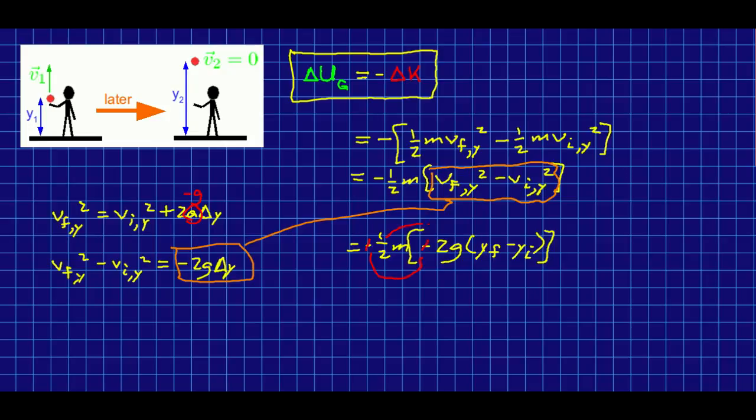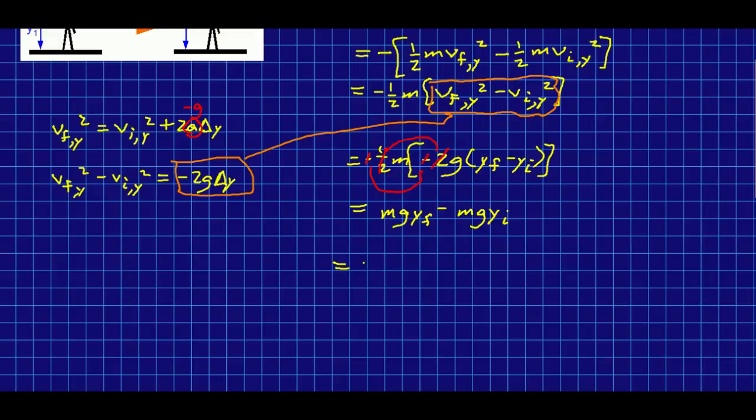And so when I do that, I can do some cancellation. The negatives cancel. The half cancels out the two. And I'm going to multiply through, and I get this expression. And note that I expect that to be of the form a gravitational potential energy final, or as a function of y final, minus a gravitational potential energy y initial. And indeed, that's exactly what I have. Here is the one piece, and here is the other. And so I can just read off that my gravitational potential energy as a function of y must just be mgy.